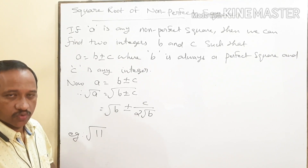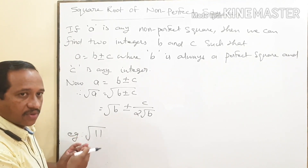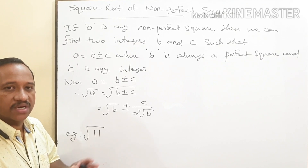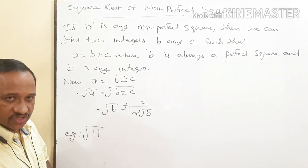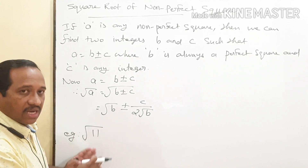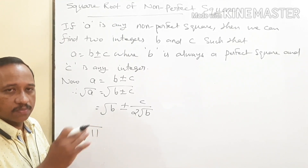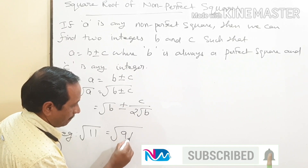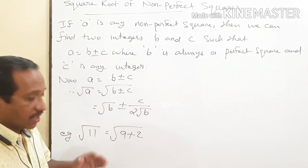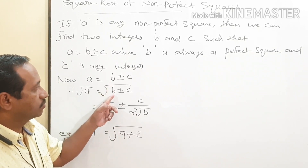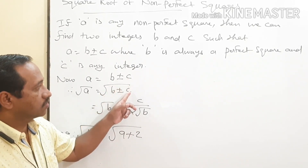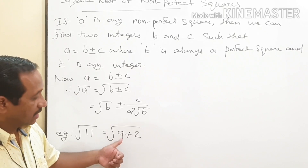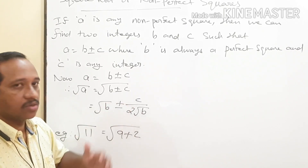It is very simple. I will explain an example. 11 is a non-perfect square. We are going to find the square root of 11 by using this method. For that, we have to split 11 as a sum or difference of a perfect square and another integer. Here, I am going to split 11 as a sum of a perfect square and another integer — that is, 9 and 2. Here, 9 takes the place of B and 2 takes the place of C. 9 is a perfect square and 2 is a non-perfect square.